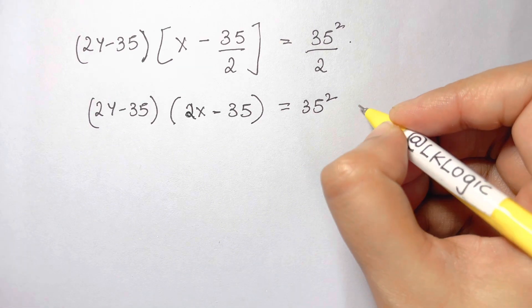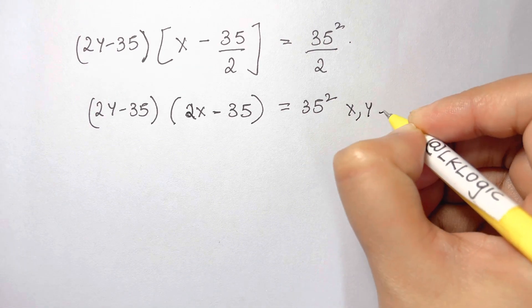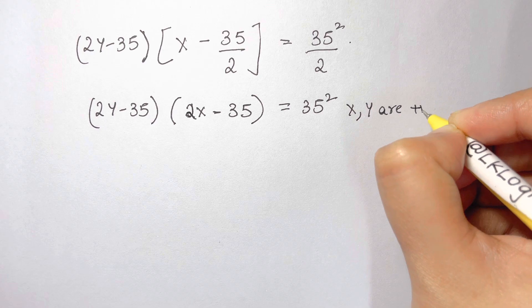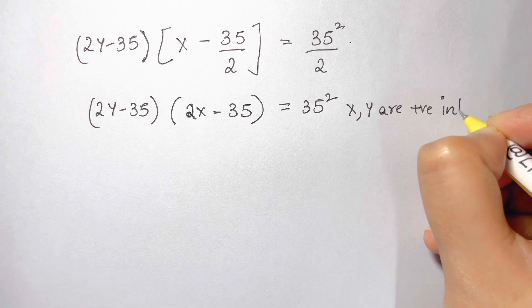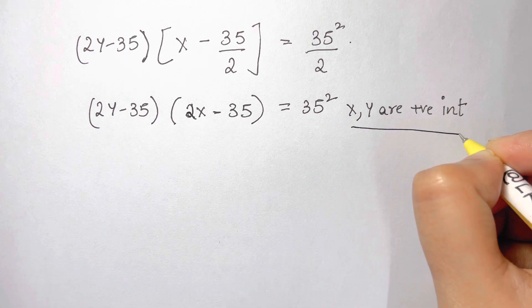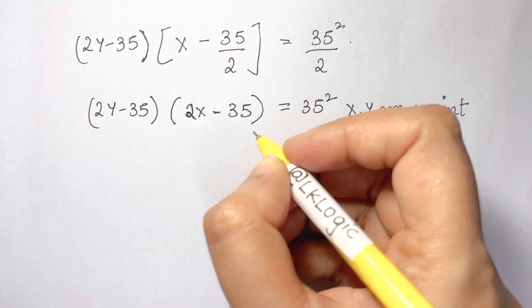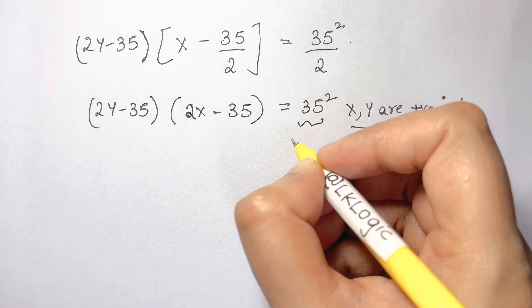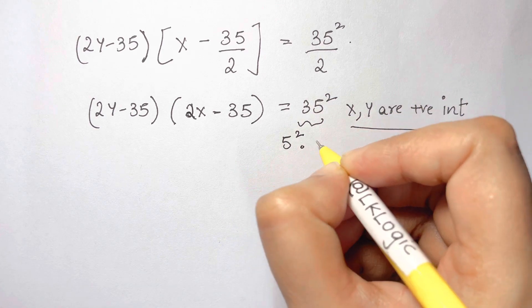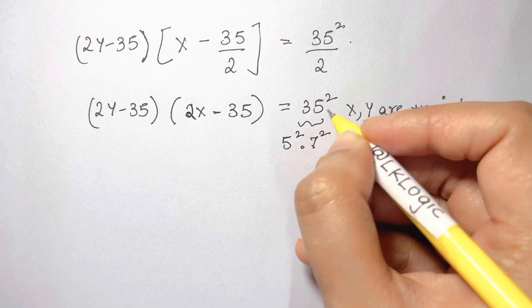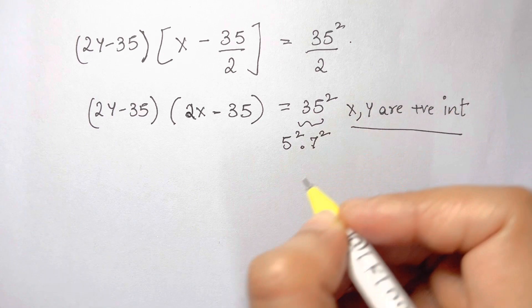And as we know, x and y are positive integers. So there are 5 possibilities. So 35 square can be written as 5 square times 7 square. 5 times 7 is 35. So you can split up as we have squared.